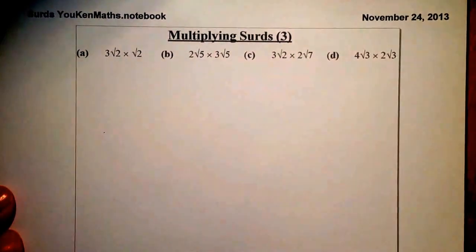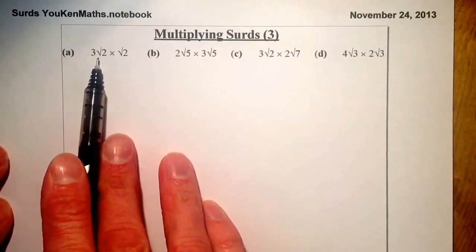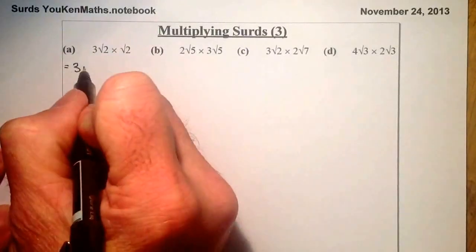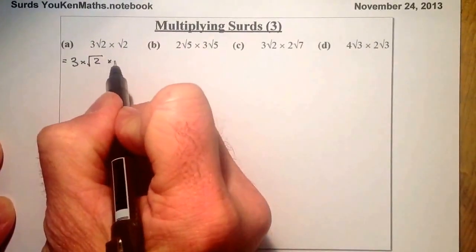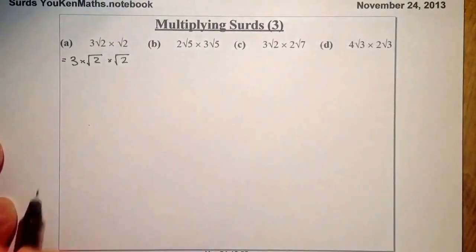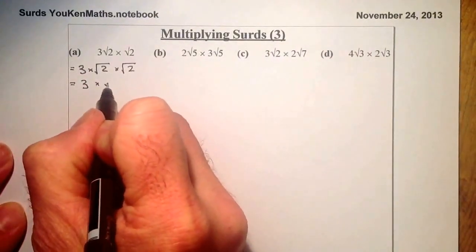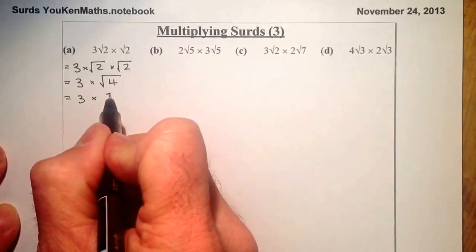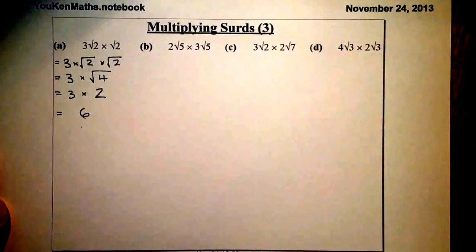Let's move on to multiplying surds that have a number outside as well. I've got a 3 at the front — so 3 root 2 means 3 times root 2 — and I'm multiplying by root 2 again. So I've got 3 root 2 times root 2. Root 2 times root 2 gives me 2, so my final answer is 3 times 2, which gives me 6.